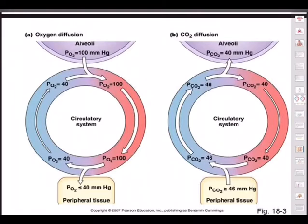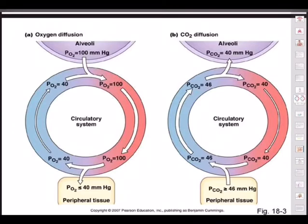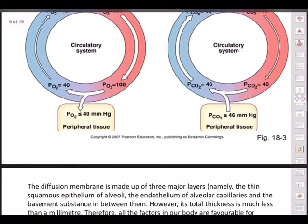Similarly, for carbon dioxide: the partial pressure of CO2 in alveoli is 40 mmHg, and it enters the arteries also at around 40 mmHg. Once it enters the tissues there is a slight increase — 46 mmHg at peripheral tissues. This 46 mmHg partial pressure of carbon dioxide is maintained in the veins as well, and from the veins it enters back into the alveoli, where the partial pressure comes down, and through the lungs, respiratory tract, and nostrils the carbon dioxide is diffused out.